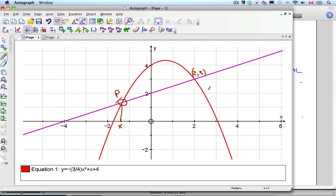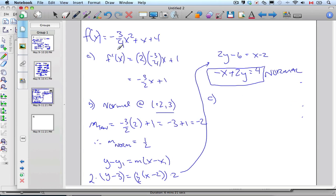So, I want to find where they intersect. Well, if I want to find where two things intersect, I set them equal to each other. So, negative 3 quarters x squared plus x plus 4 equals, well, I need to have it set equal to y.